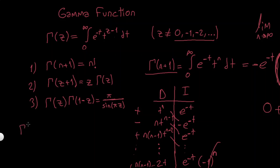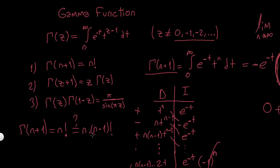Now let's say something about the second property. Gamma(n+1) = n!, and I'm wondering: is this really equal to z*gamma(z), i.e., n*gamma(n)? Well, gamma(n) = (n-1)!, so n*gamma(n) = n*(n-1)! = n!, which is indeed true. So this holds for any integer n. But this also tells us it's true for any complex z — and we could have proved it in just one step of integration by parts instead of n steps.